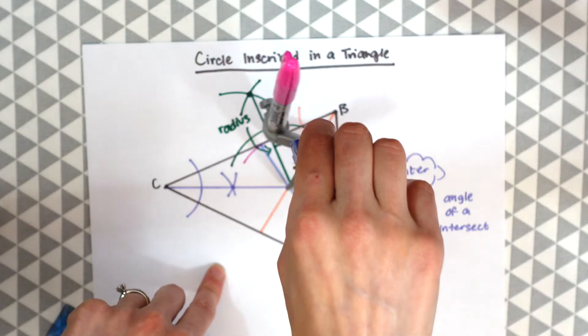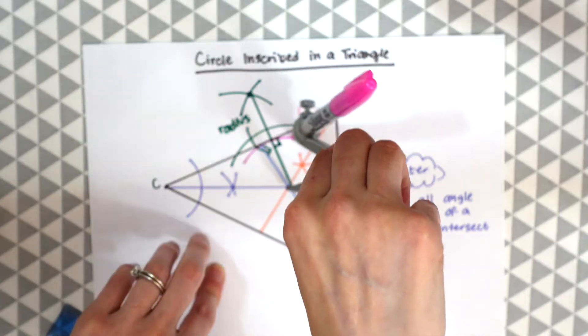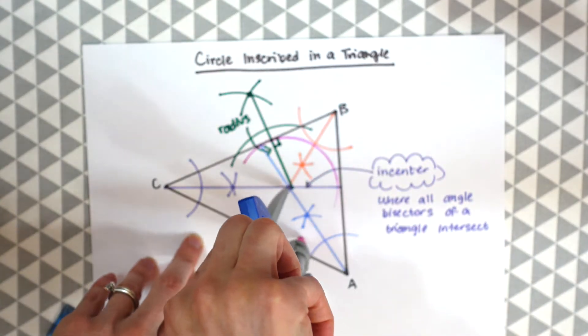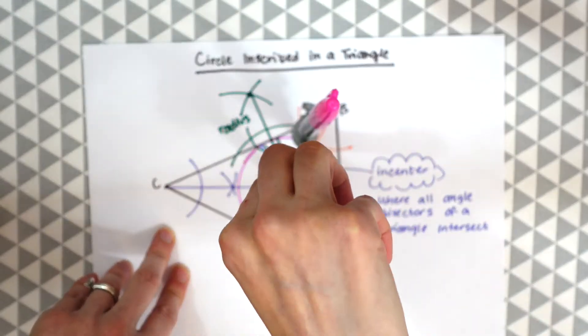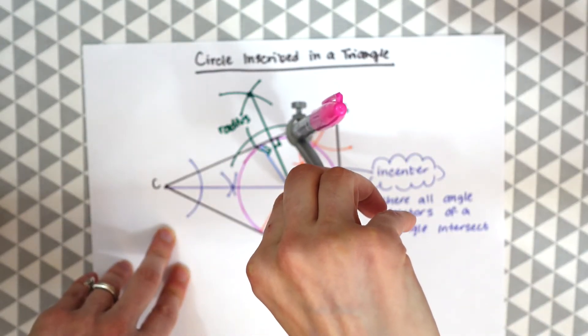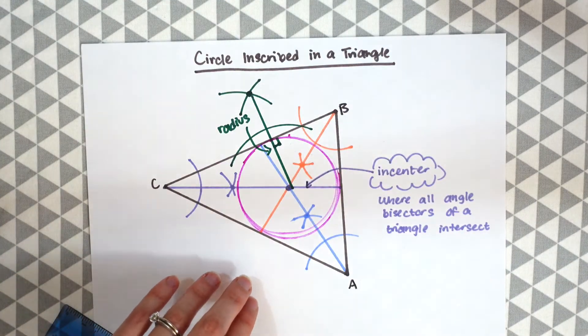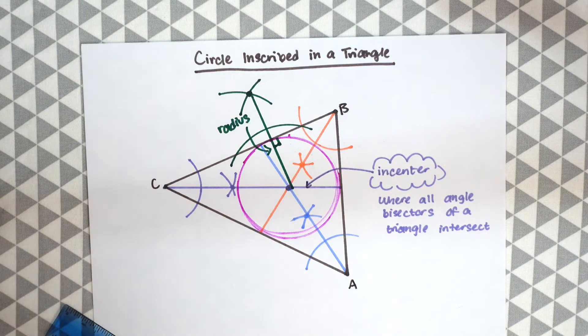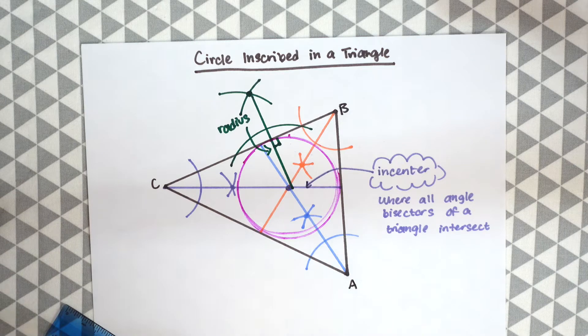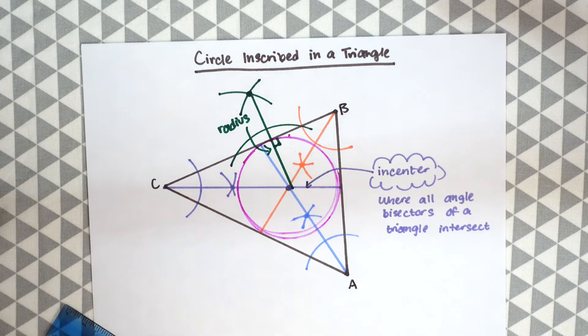So we have a point at the incenter and then we're just going to swing our compass around until we have a nice circle that looks something like that and that is how we inscribe a circle in a triangle.